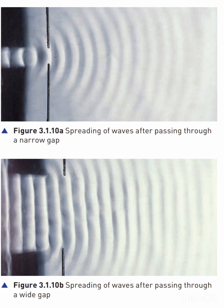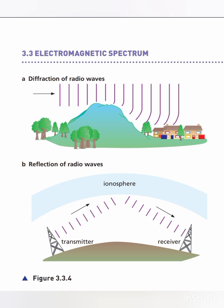For a single edge, diffraction will occur at the edge. The spreading and curvature of the wavefront around the edge will be more noticeable for longer wavelengths. Diffraction of radio waves around an obstacle is shown in figure 3.3.4a.